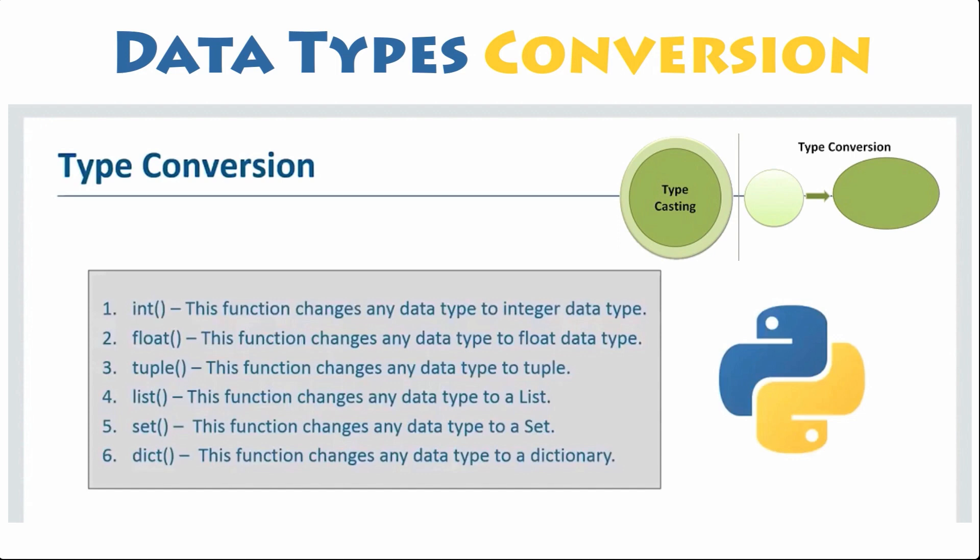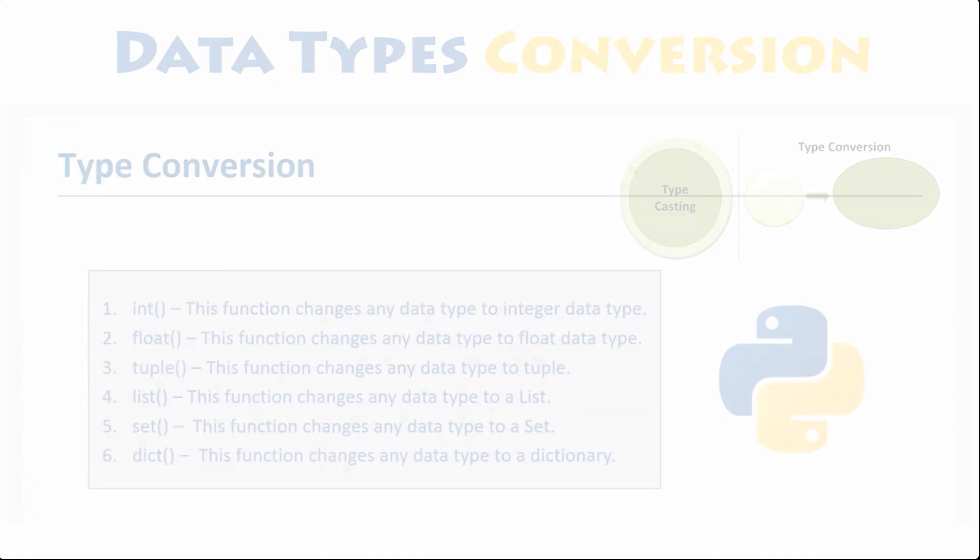Suppose you declare the list mentioned in the example as a tuple in a program. It will become immutable for that particular operation. Similarly, we can use other constructors as well.